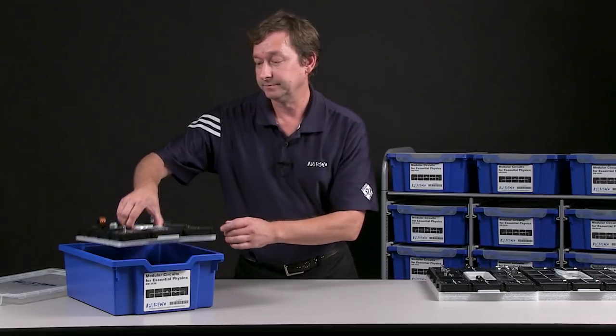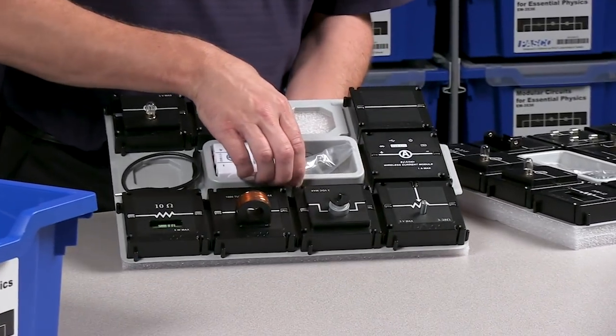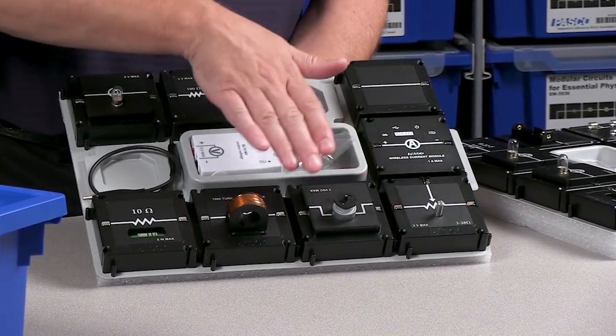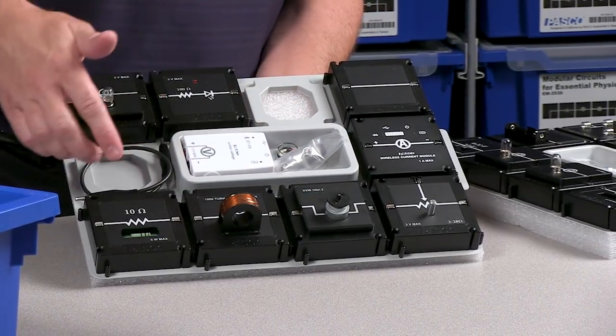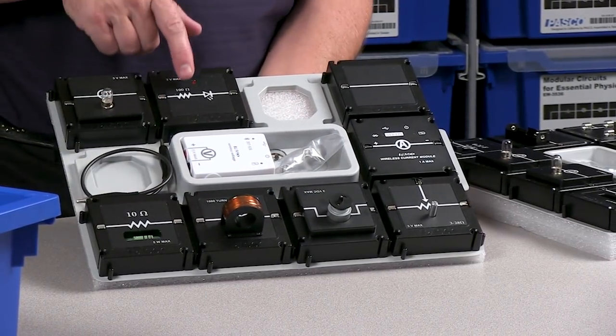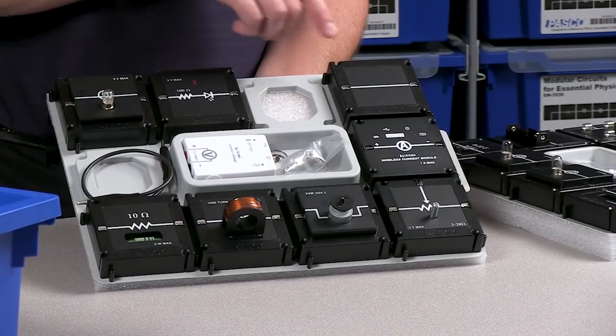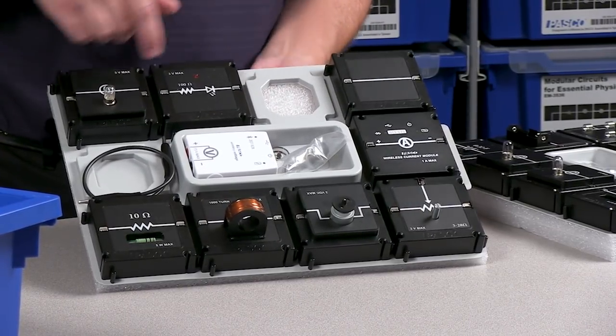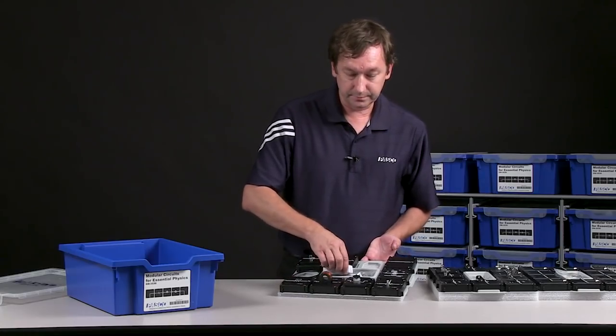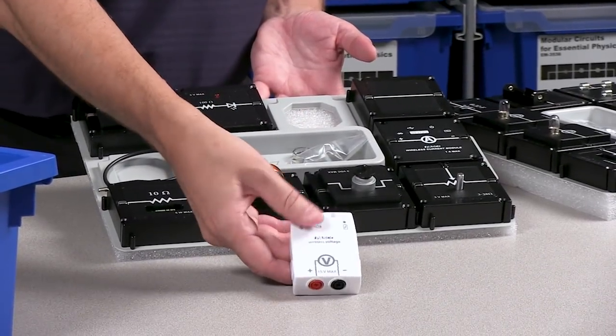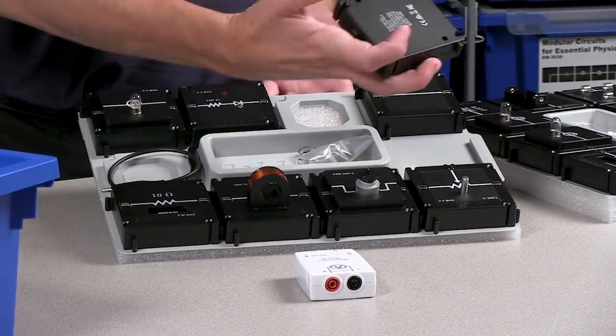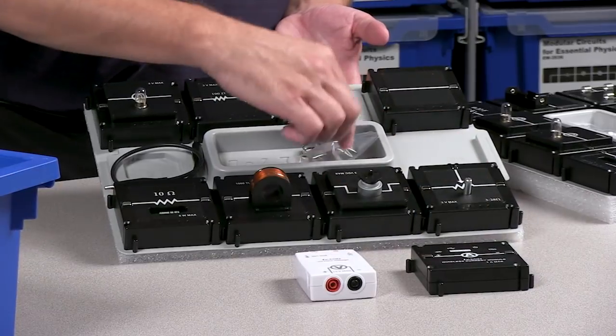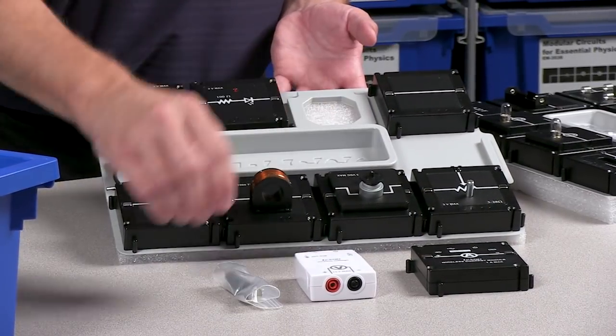Now the bottom layer, look and see what we have here. We have a potentiometer, we have a motor, an inductor, an extra resistor, a diode, an extra light, another connecting wire. And then there's also a wireless voltage sensor and a wireless current sensor, as well as a set of magnets and a compass.